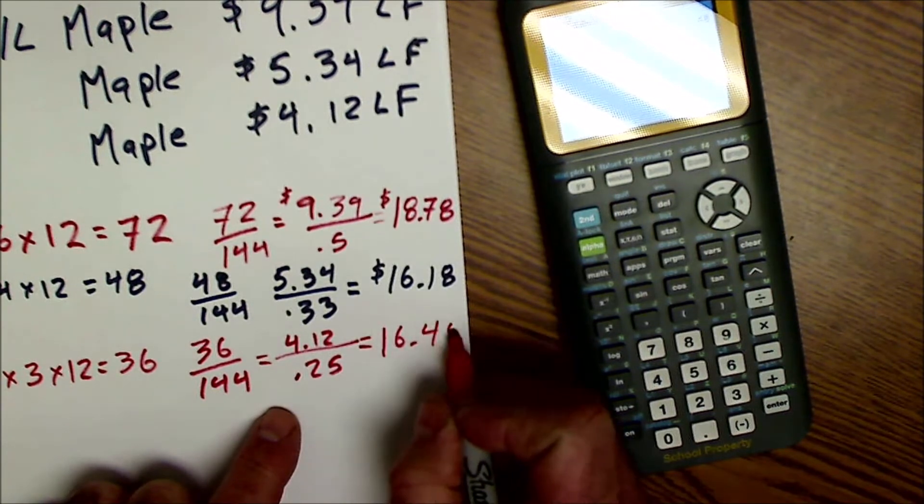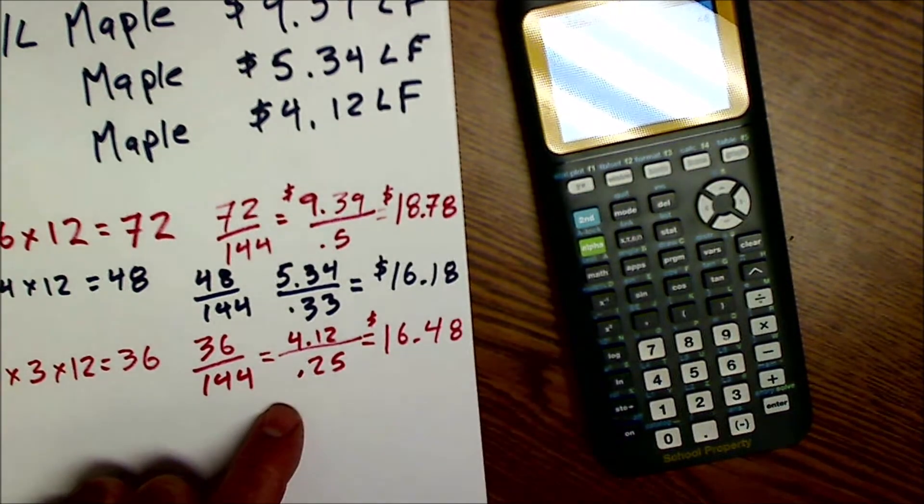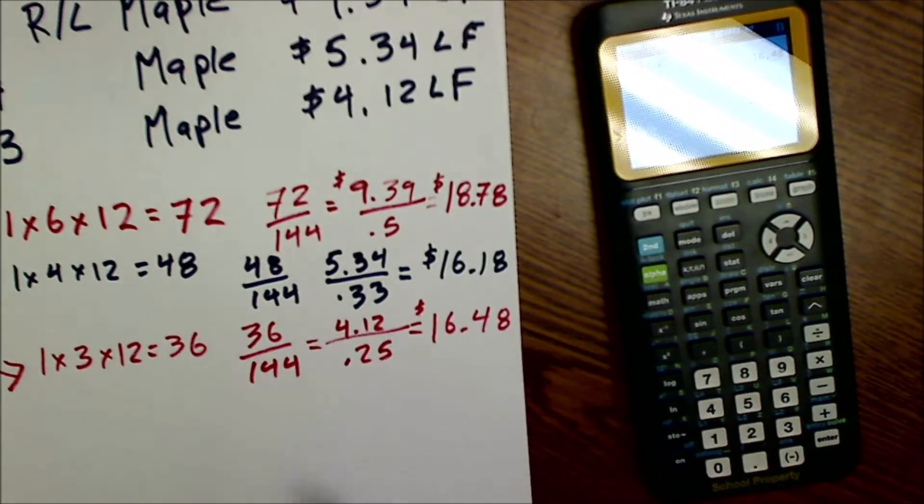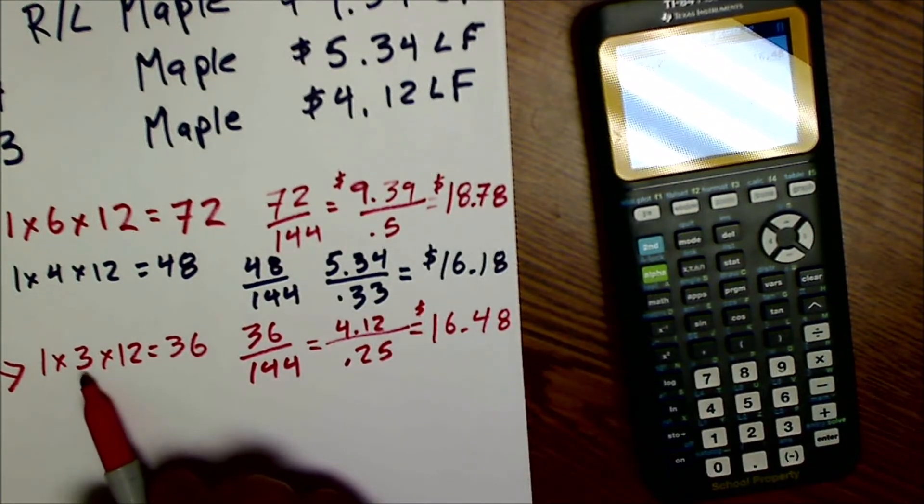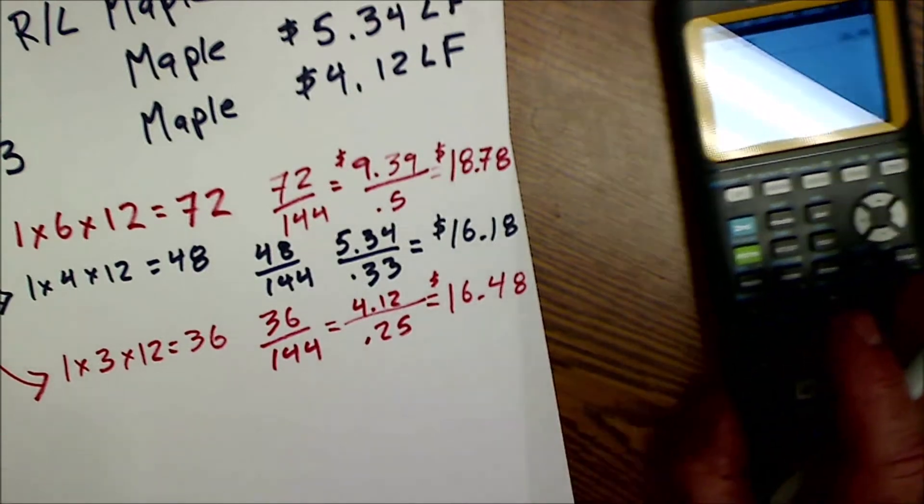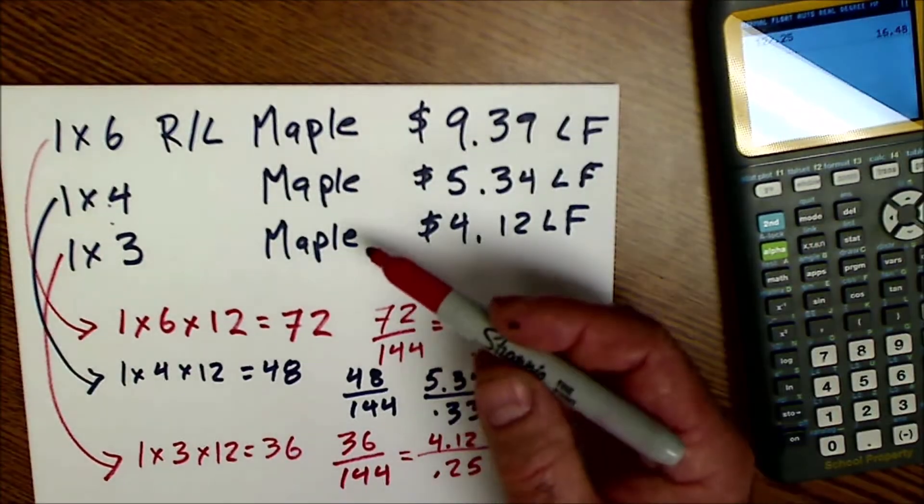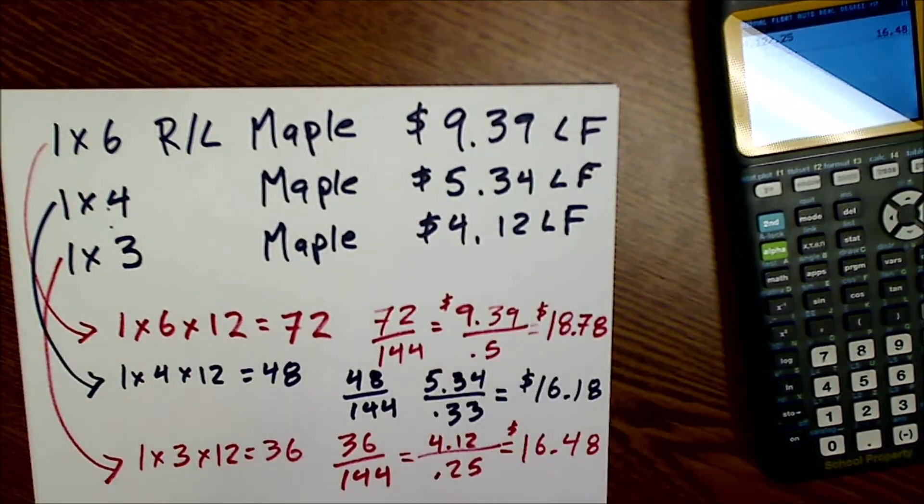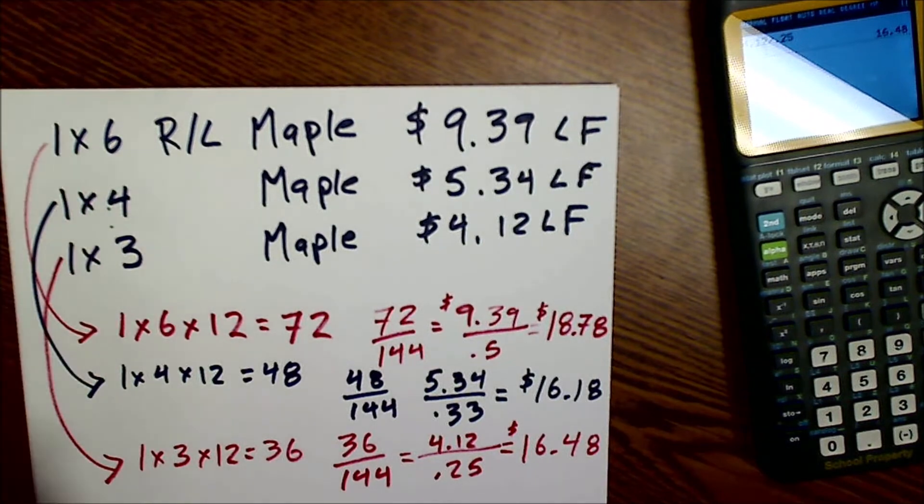So $4.12 divided by that 0.25 gives me $16.48. Didn't even make any sense. And the price per board foot goes back up. So that blows my whole theory on the narrower the board, the less it is. So all three of these boards are all out of the same tree. They're all the same maple. They all come in random lengths.